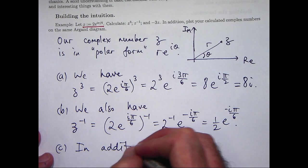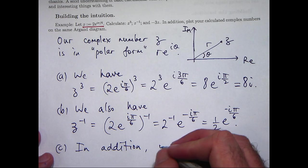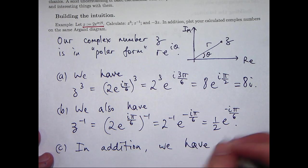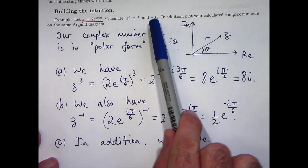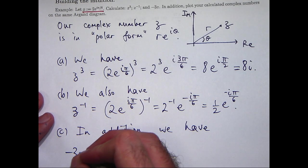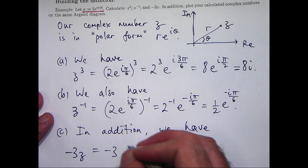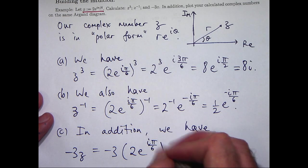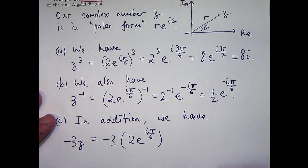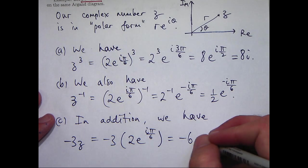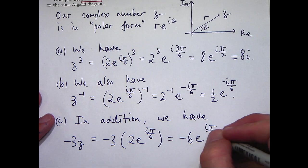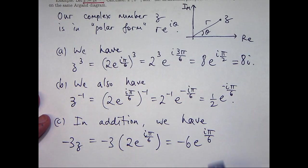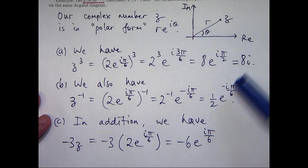So lastly, we would like to calculate -3z. Let's use our polar form again. Again, nothing fancy here, just regular multiplication. But there's a slight difference between this and these previous calculations.